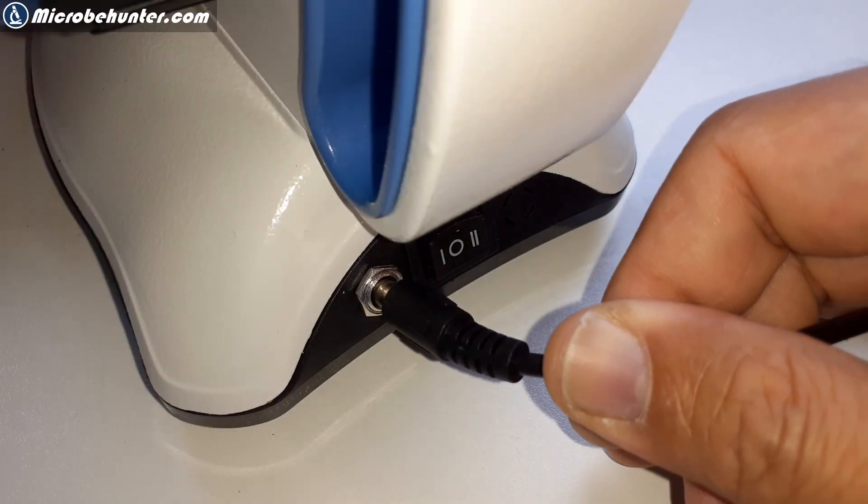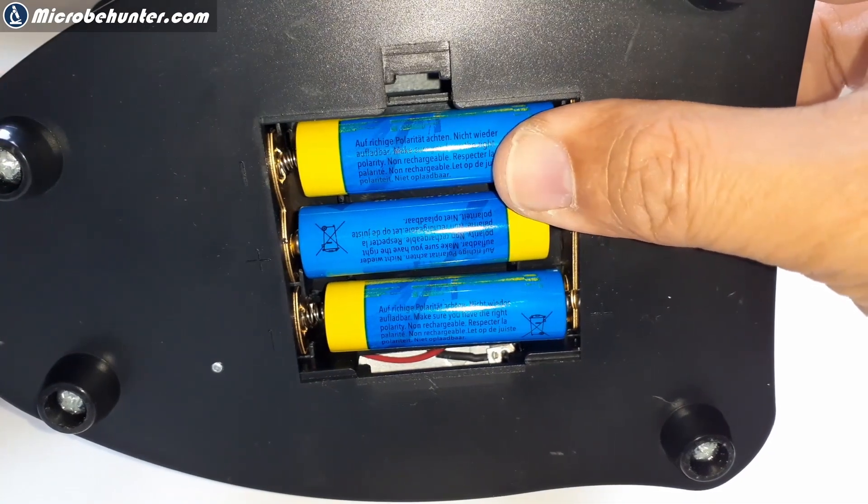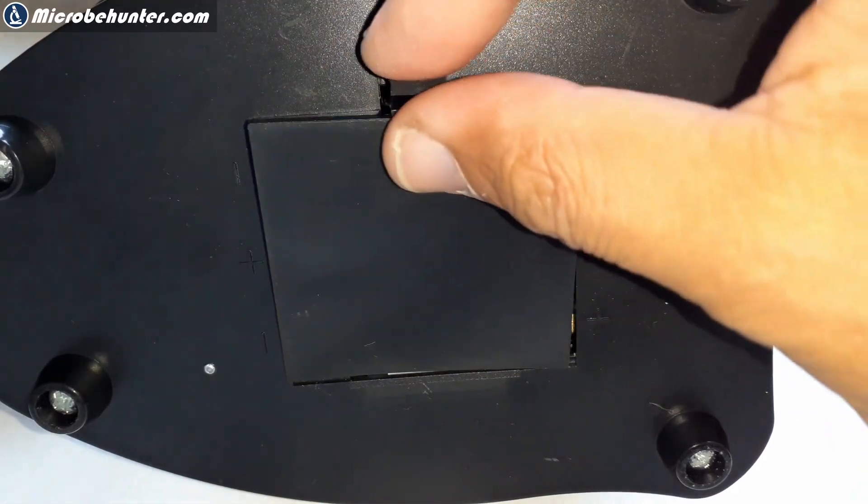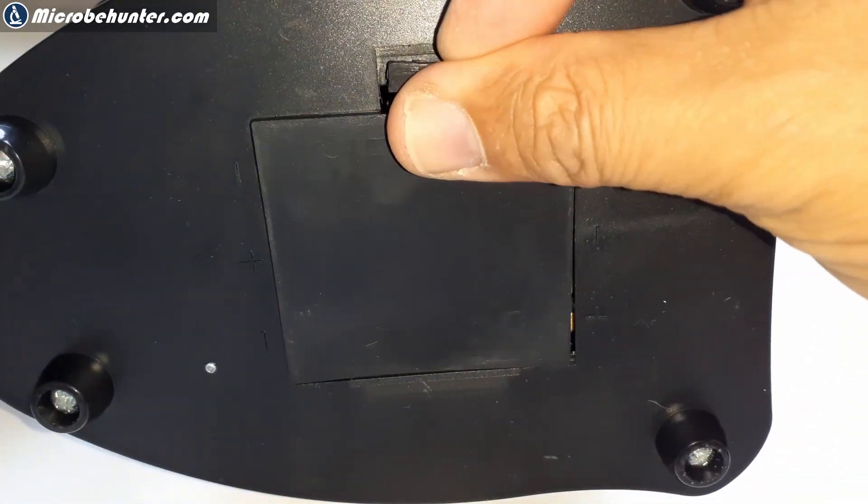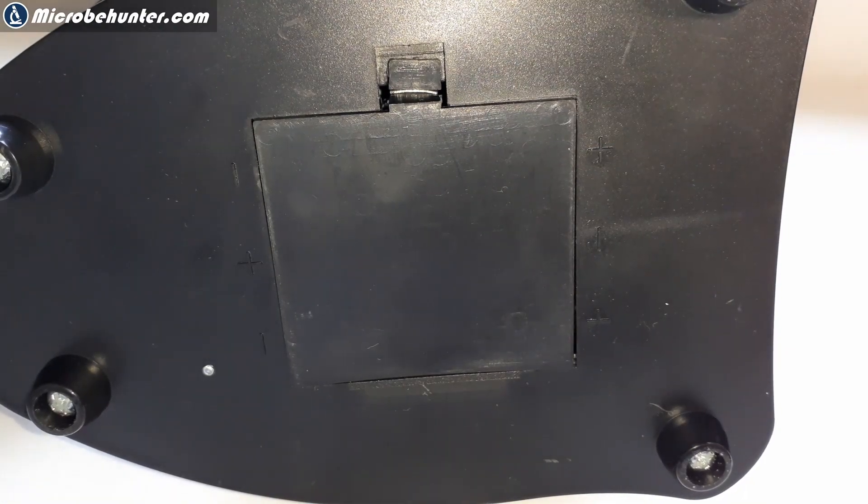There is a possibility now to plug in the power adapter here. And it's also possible to add three AA batteries here. And of course, a battery cover has to go on top of it. Well, then what else do we have here? When we look at the microscope...